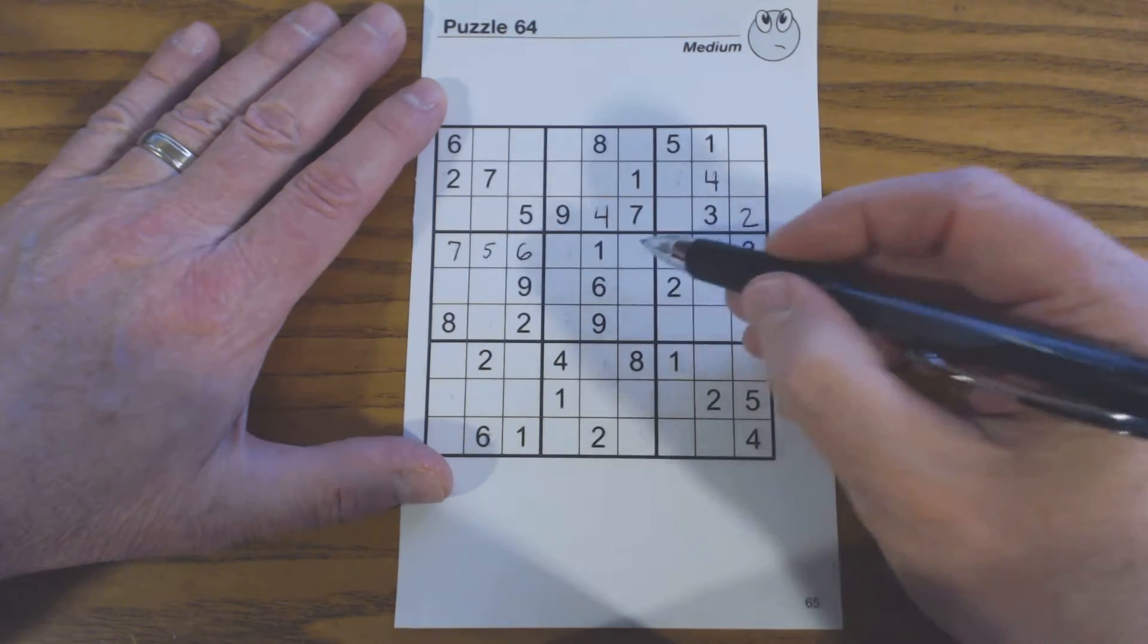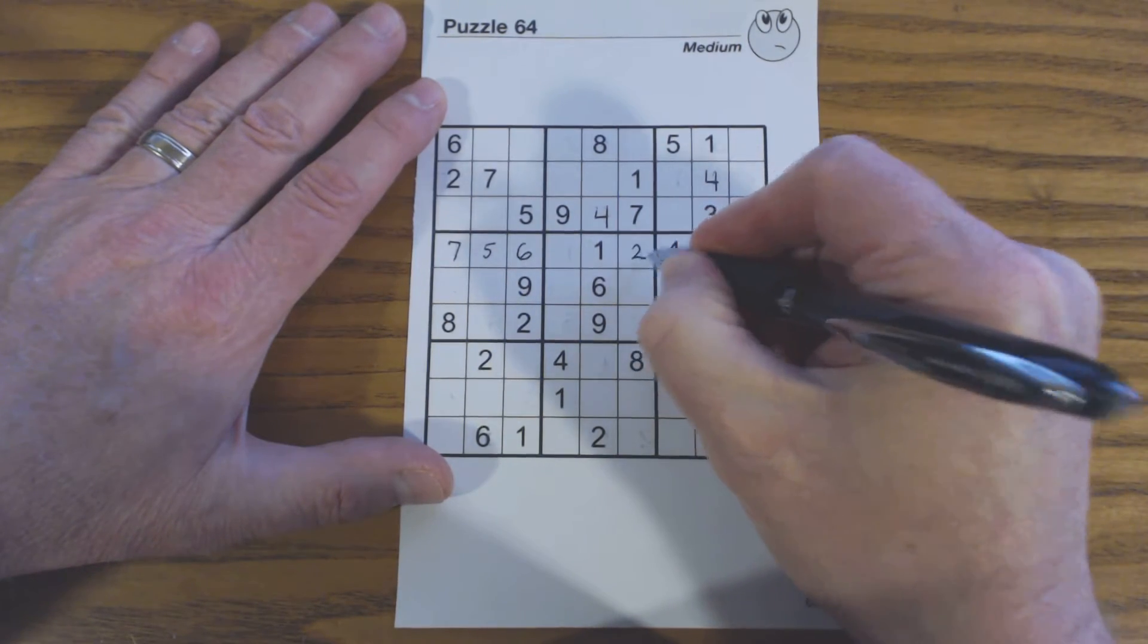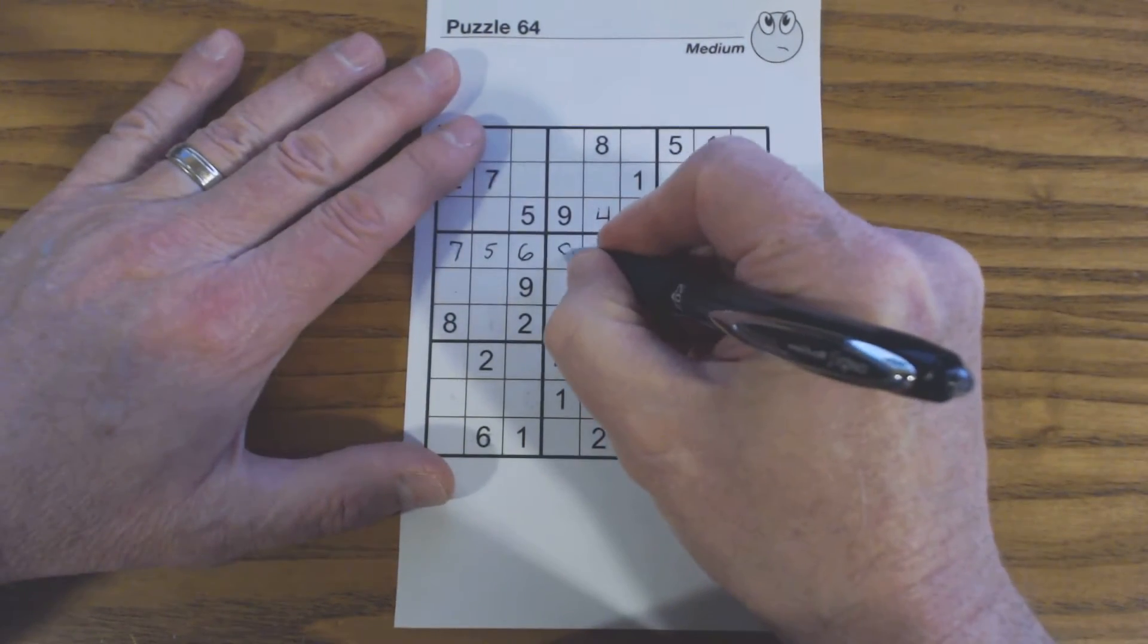Now these are twins, 2 and 8. Oh, there's an 8 here, so we can put a 2 there, and an 8 there.